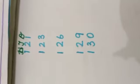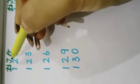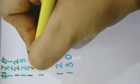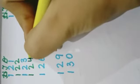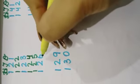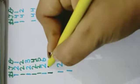Our next column is 1, 2, 1: 121. What comes after 121? 122. 123. What comes after 123? 124. 125. What comes after 125? 126. What comes after 126? 127.